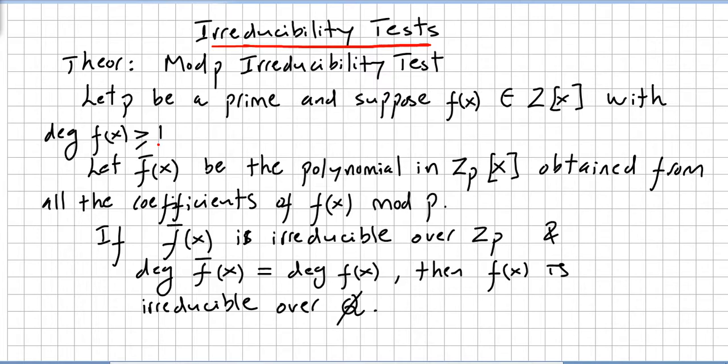Let f̄(x) be the polynomial in Z_p in the ring of polynomials in Z_p obtained from all the coefficients of f(x) mod p. If f̄(x) is irreducible over Z_p, and the degree of f̄(x) equals the degree of f(x), then f(x) is irreducible over the rationals.